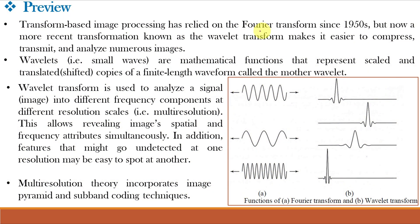Joseph Fourier gave us the tool of Fourier analysis, which till date is one of the most commonly used signal analysis techniques. But a more recent transformation known as wavelet transform makes it easier to compress, transmit and analyze numerous images and signals. Unlike Fourier transform, whose basis functions are sinusoids, wavelet transform is based on wavelets — small waves which are mathematical functions representing scaled and translated copies of a finite length waveform called the mother wavelet. Fourier waves are sinusoids of infinite duration, whereas wavelets are based on small waves of varying frequencies and limited duration.